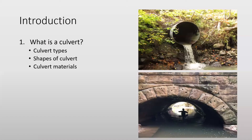Rigid culverts can be made from steel, concrete, plastic, or rock masonry materials, as shown here in these two pictures — an example of each type. The top one is a standard corrugated metal pipe culvert, and the bottom is an arched masonry or rock culvert that may actually be serving two purposes: not only transporting and displacing this body of water, but also serving as a bridge.